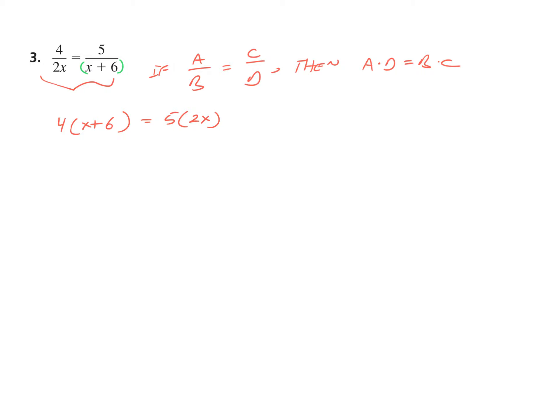This one is a straight-up linear equation. There's no second-degree X term, so there's no quadratic strategies needed — it's basically last semester. Distribute the 4, getting 4X plus 24. 5 times 2X gives you 10X. Now isolate the variable: 24 equals 6X. Multiply through by one-sixth. 4 equals X. Nothing interesting happening here once you apply the means-extremes property.